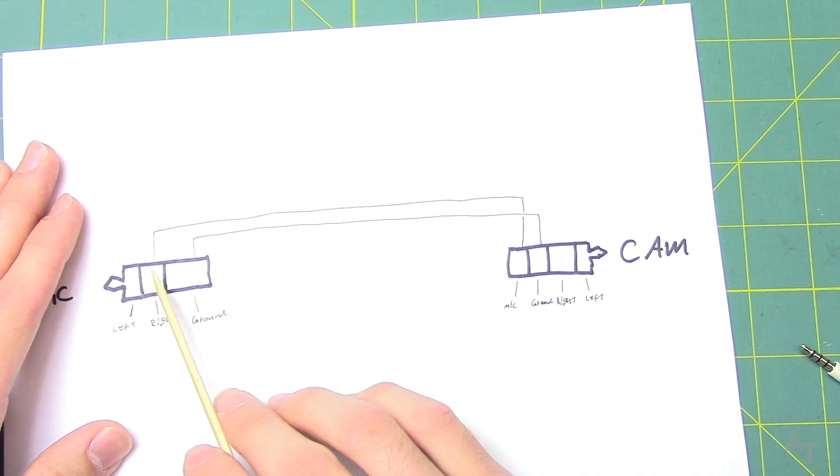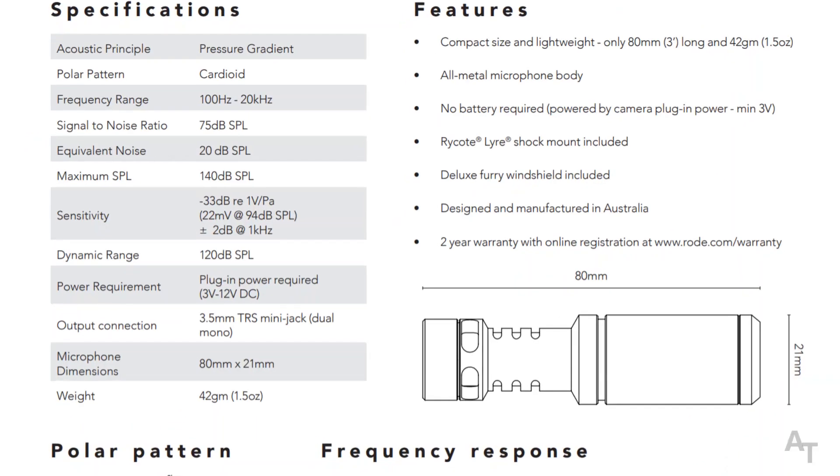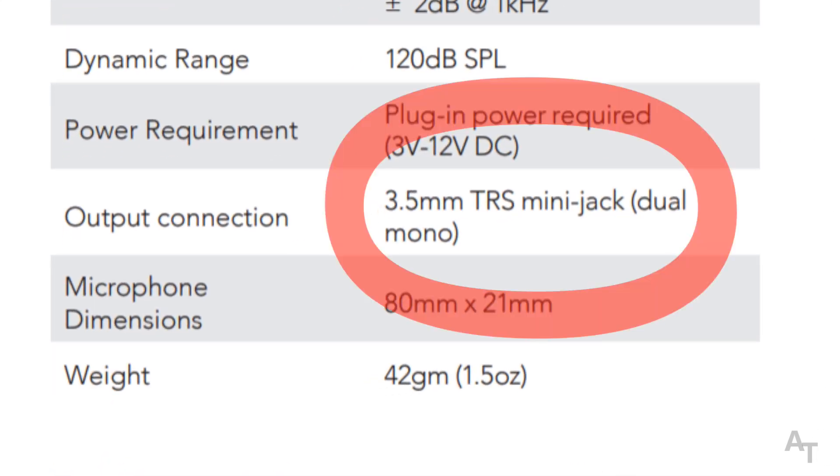So you have this extra one here. The game plan here, what we're going to do is take the right audio. It could be the right or left in this case because it's producing a dual mono.